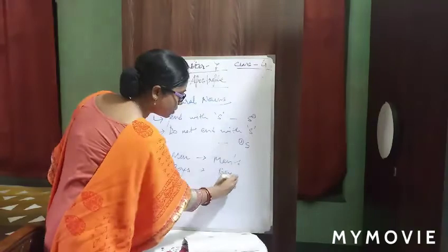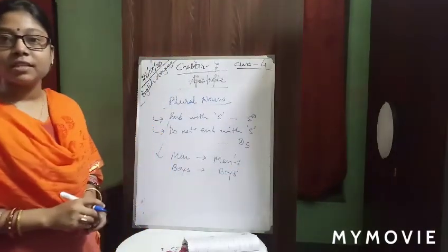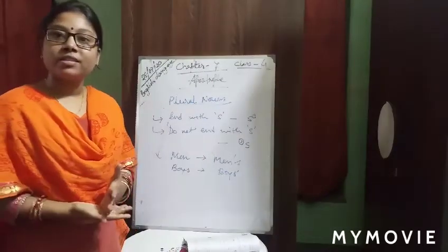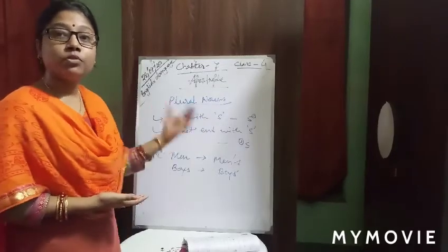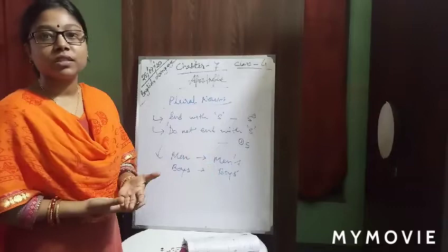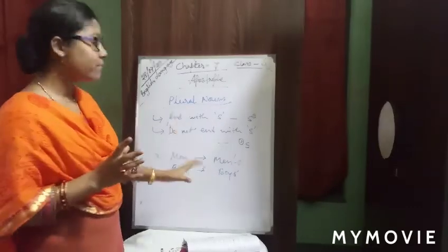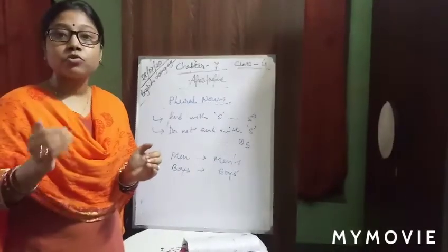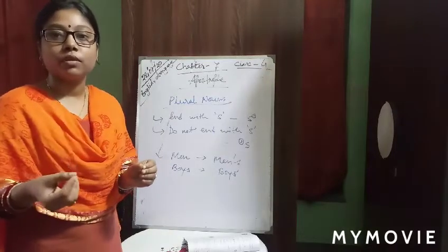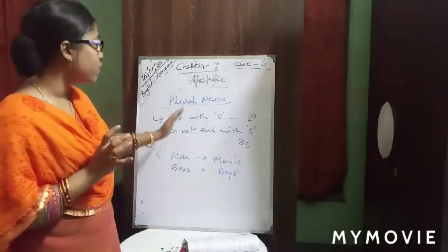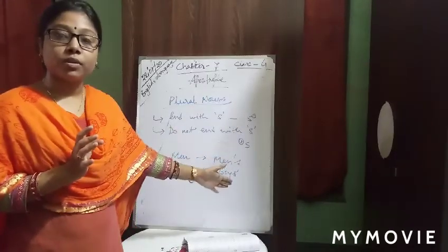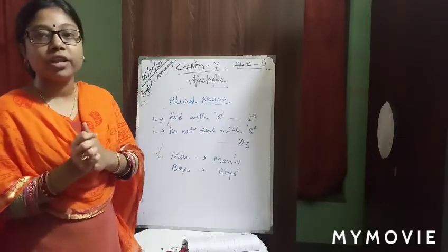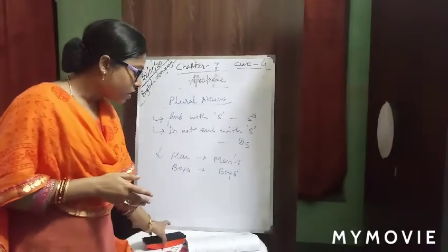If it ends with 's', like 'boys', we write 'boys'' — apostrophe after the s, because it stands as plural. So the rules for plural nouns: if it ends with 's', put apostrophe after; if it does not end with 's', put apostrophe then s. These rules we have to keep in mind properly, otherwise we can place the apostrophe in the wrong way.